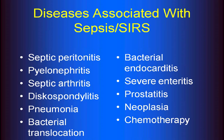What are some diseases that we see that are associated with sepsis? Well, really any infection that can cause a systemic reaction. So pneumonia, discospondylitis, septic arthritis are classic causes of sepsis, as are septic peritonitis and bacterial endocarditis. But we can also see just even bacterial translocation from severe enteritis that can cause a bacteremia or an endotoxemia.